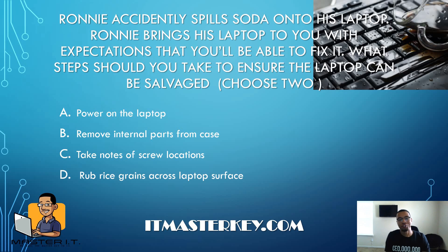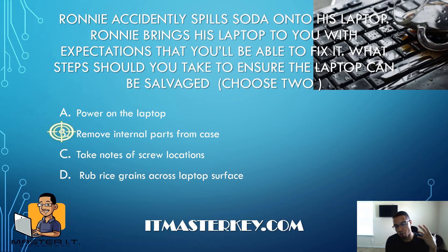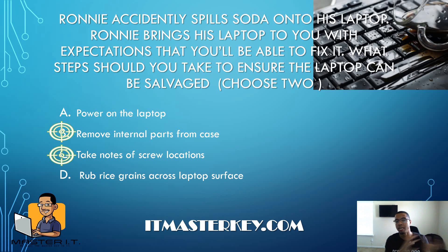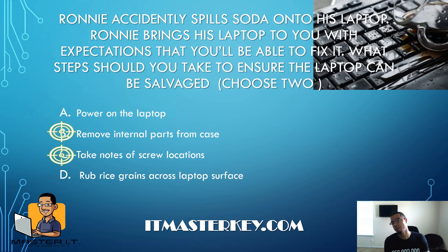Ronny accidentally spilled soda onto his laptop and brings it to you expecting you to fix it. What steps should you take to ensure the laptop can be salvaged? Choose two. Easy — remove the internal parts from the case, and take notes of screw locations. When you're taking apart a PC or laptop, screws may look the same size but some are smaller or bigger. You can take notes, or since 2019, just take a video as you're taking it apart and watch it back when reassembling.